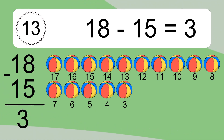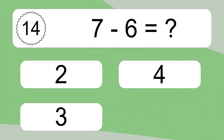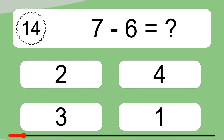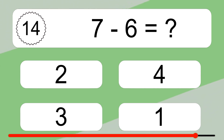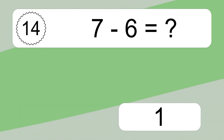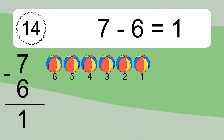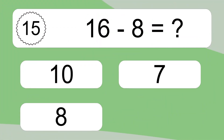7 minus 6 equals what? 7 minus 6 equals 1. Let's count it: 6, 5, 4, 3, 2, 1.